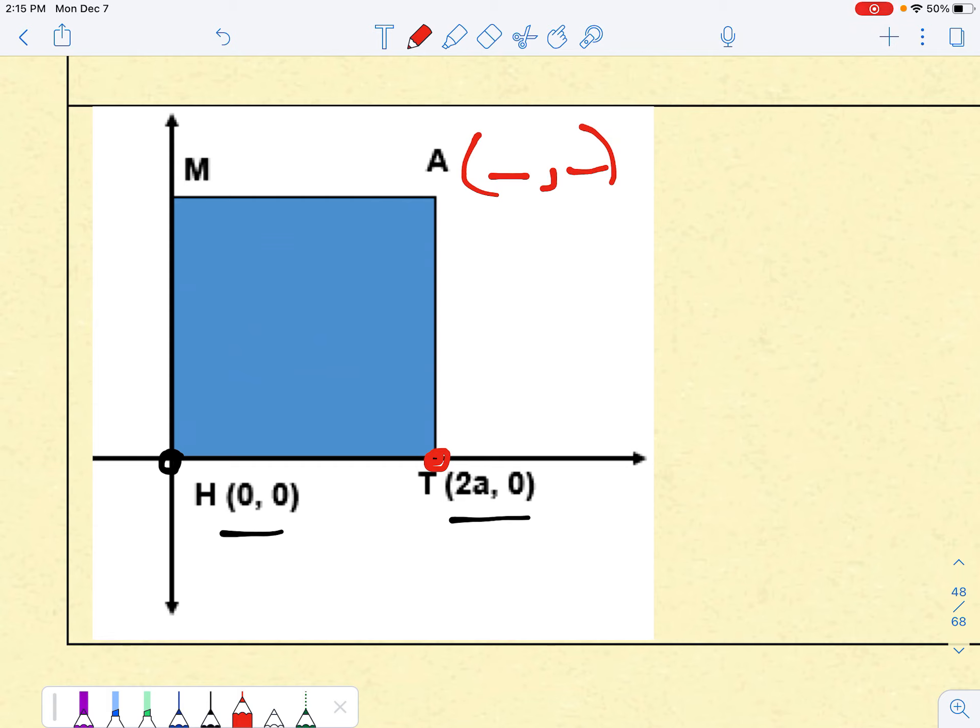Now, notice these sometimes are numbers. Zero is a number. But sometimes you have letters as coordinates. So this tells me the distance from here to here is 2a.